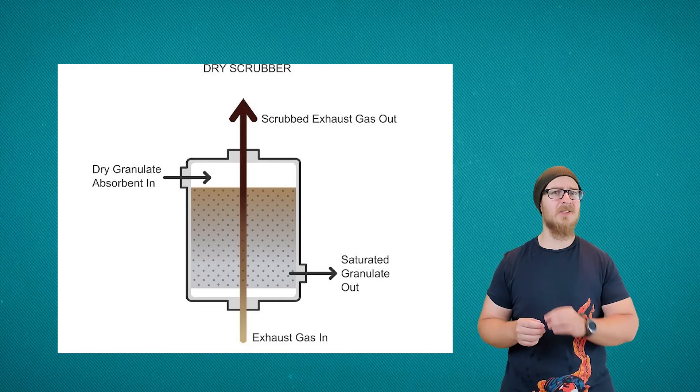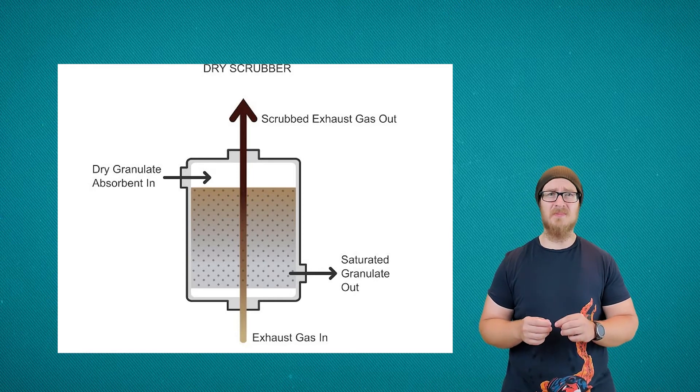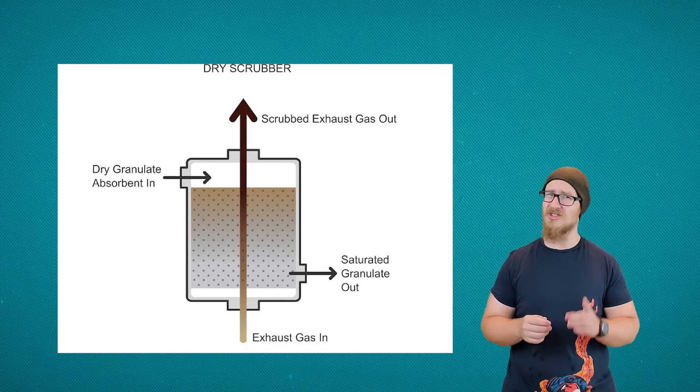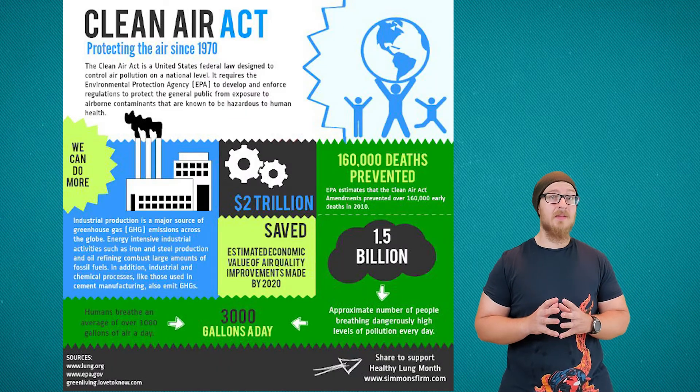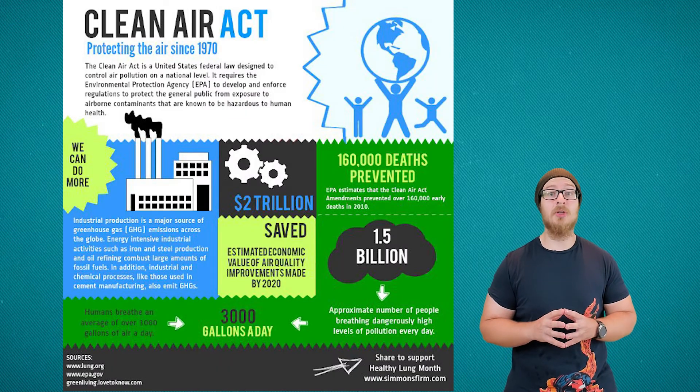There are also dry scrubbers, which instead use an absorbing material to filter out the pollutants. They are, however, not as effective as wet scrubbers, but they are cheaper.